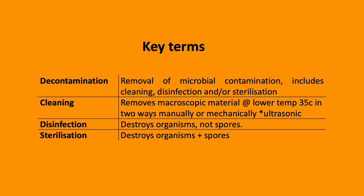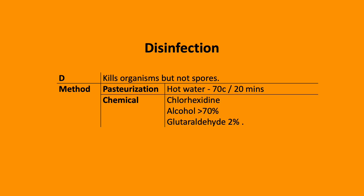Disinfection destroys organisms but not spores, while sterilisation destroys organisms including spores. Disinfection includes pasteurisation — using hot water at 70 degrees C over 20 minutes — or chemical measures, for example chlorhexidine, alcohol and glutaraldehyde.